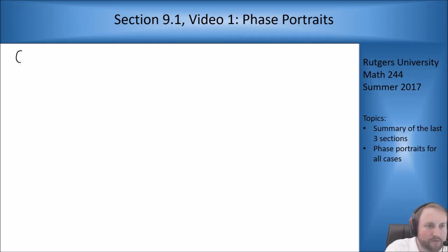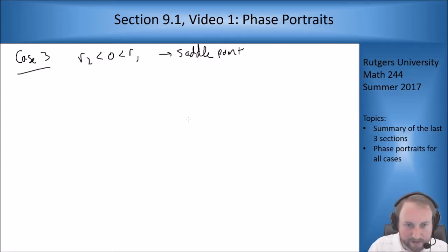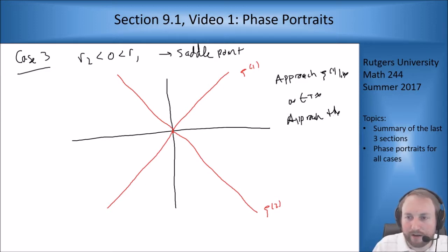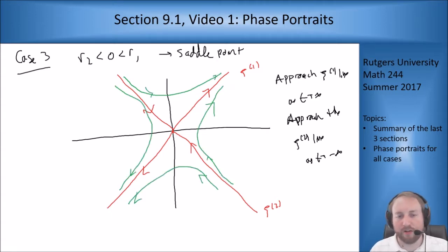Case three is our saddle point. This is if r2 is less than zero is less than r1. C1 up here, c2 down here. Since r1 is positive and r2 is negative, I approach the c1 line as t goes to infinity and I approach the c2 line as t goes to minus infinity. My curves look like they're all along this line. They come across and they go up along this line.